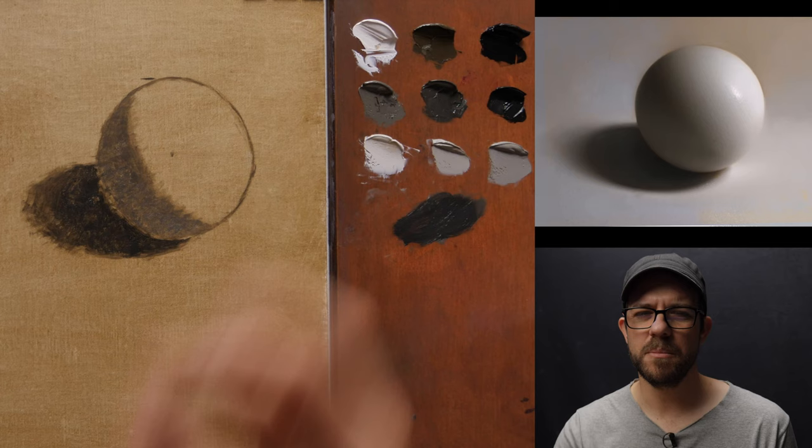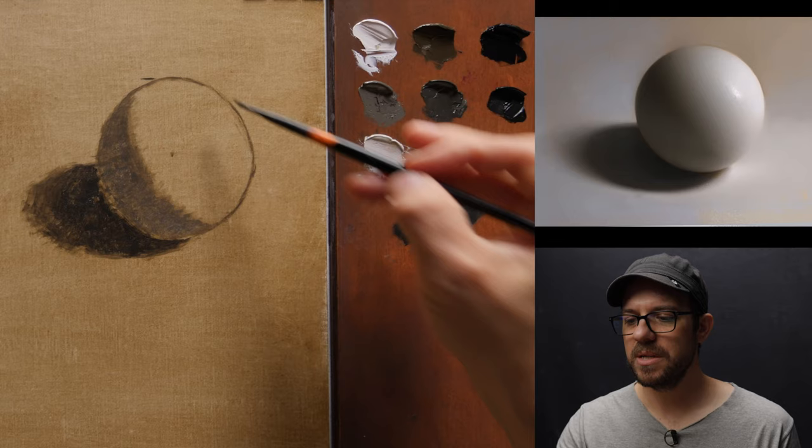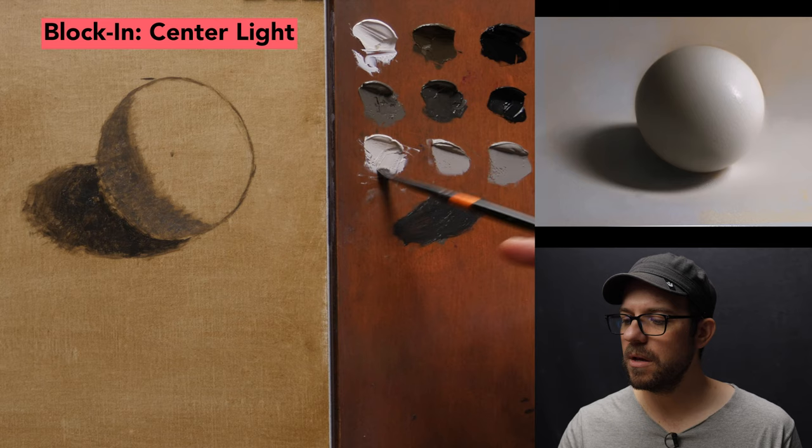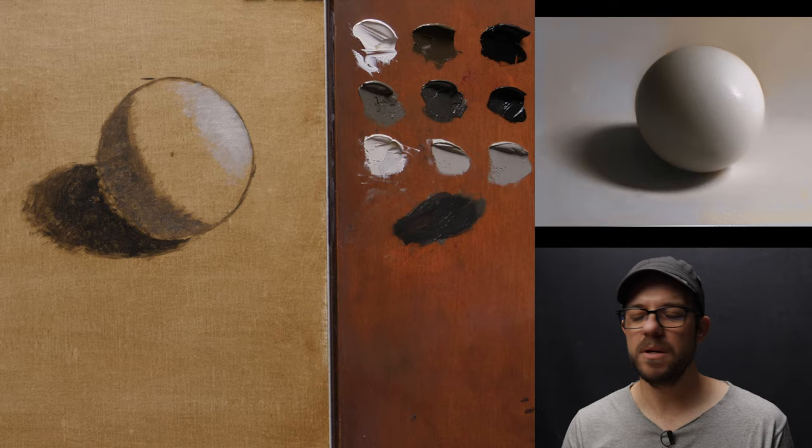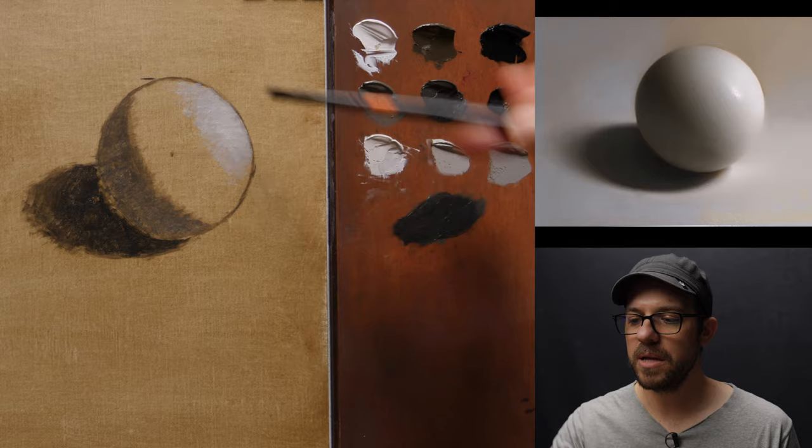I'm actually going to move to the center light up here. I want to know what the brightest area of the form is going to look like. Now that I've got a nice center light value out here that's working pretty well, I've left this interior edge to be just a little bit softer: slightly harder edge at the outside, softer in the inside.